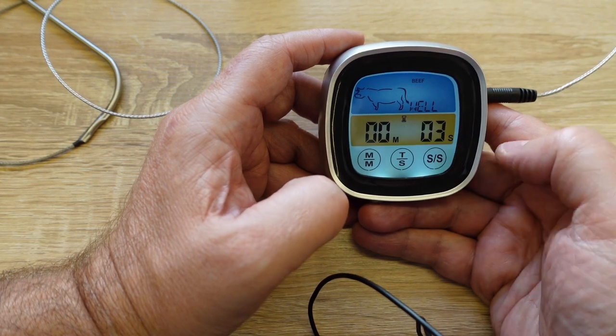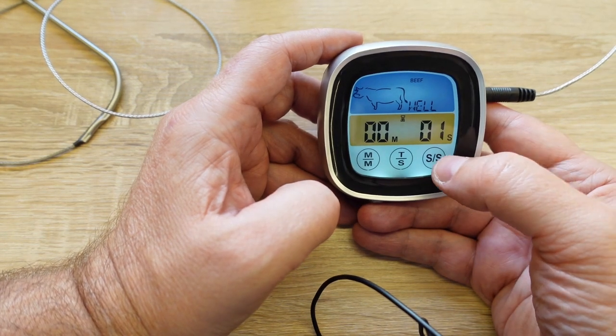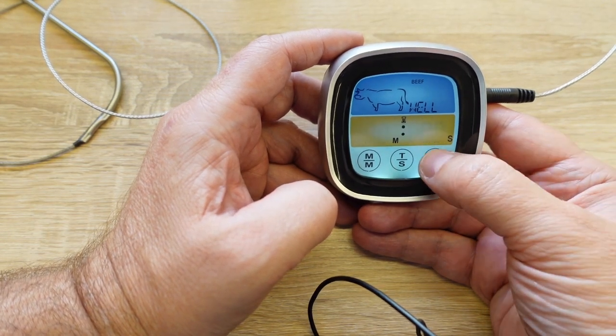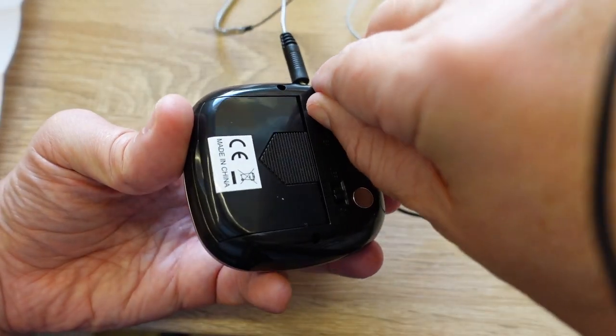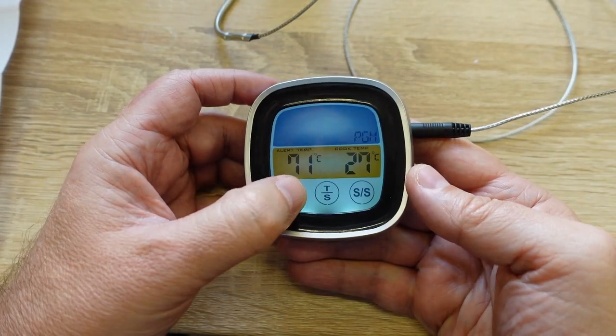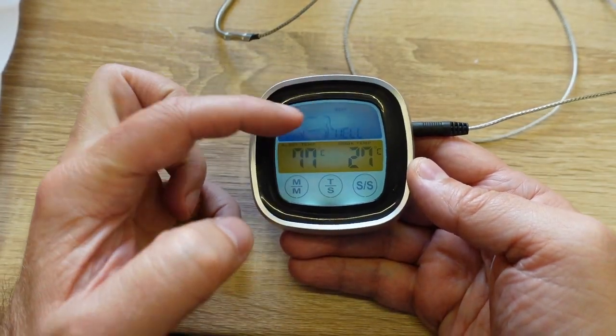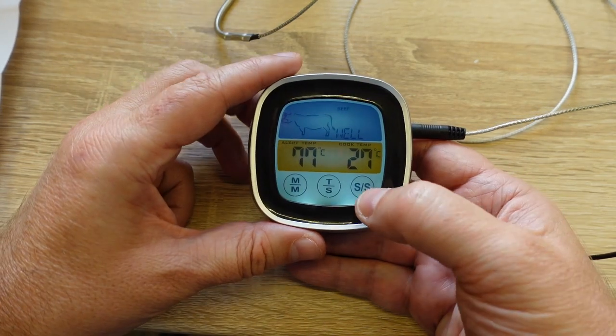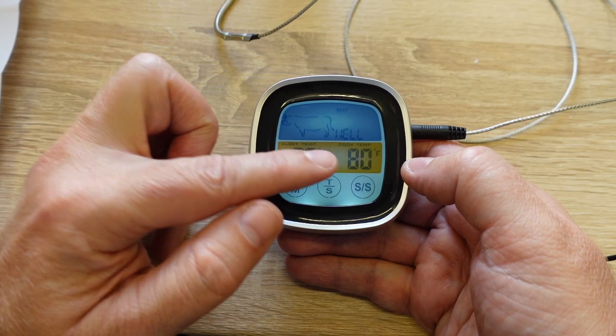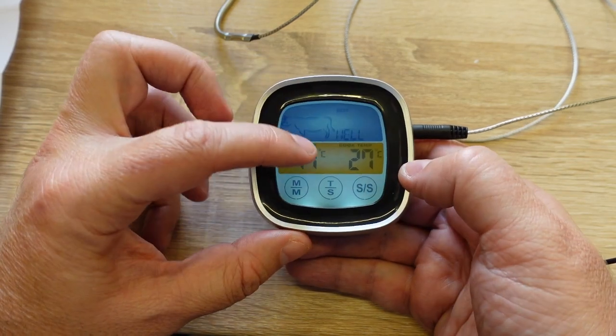Switch to the cook mode. What we can see here are different preset temperatures, this is the alert temperature, and this is the cooking temperature. I can change the units. Now it is in Fahrenheit, and now it is in degrees Celsius.